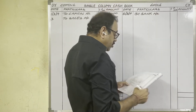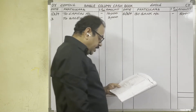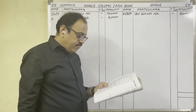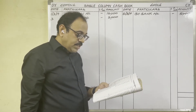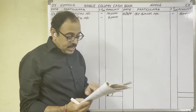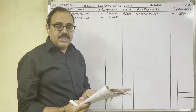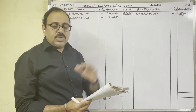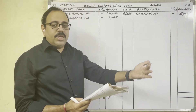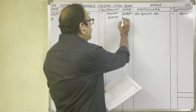8th day: purchased goods from Varun for cash, 1,500 rupees. It is clearly given as for cash, so goods are coming in and cash is going out — credit side. Write: 8th date, By Purchases account, 1,500 rupees.